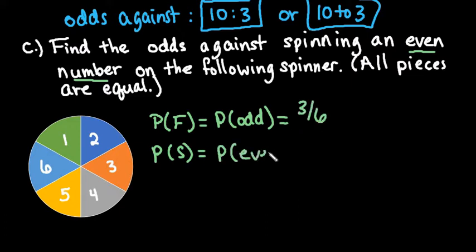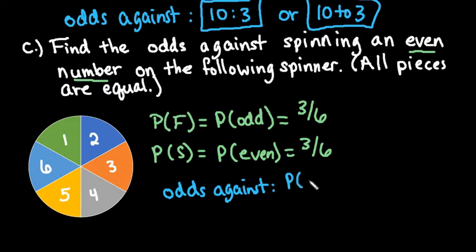The probability of even - that's 2, 4, or 6 - also happens 3 out of 6 times. So P(S) = 3/6. When setting up the odds against, we do probability of failure divided by probability of success: 3/6 divided by 3/6. When you have the same thing over the same thing, this ends up being 1 over 1.